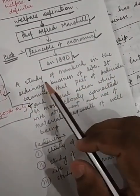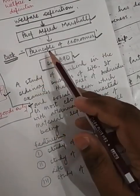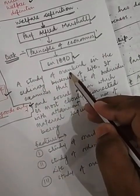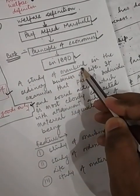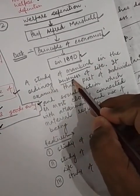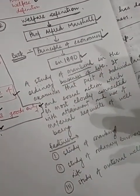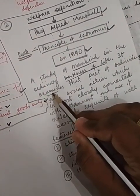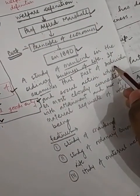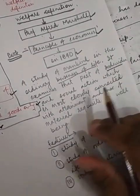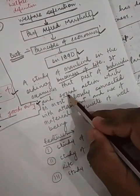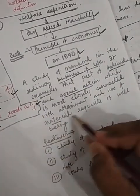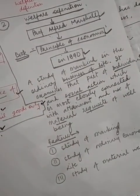What he gives: Professor Marshall has said — economics is a study of mankind in the ordinary business of life, meaning in common life. It examines that part of individual and social actions which is mostly connected with the attainment and use of material resources of well-being.